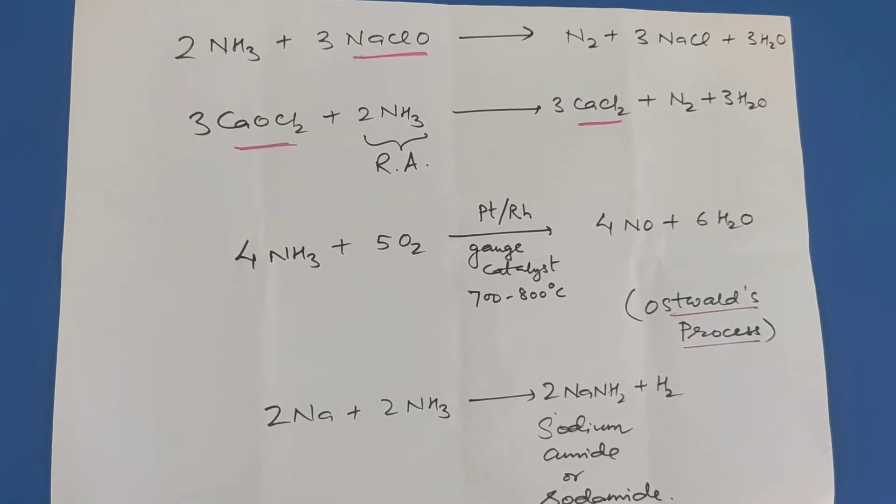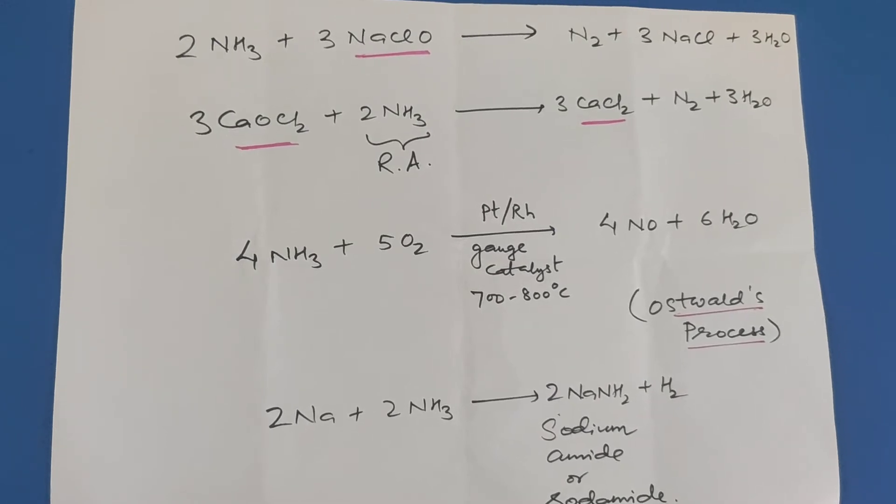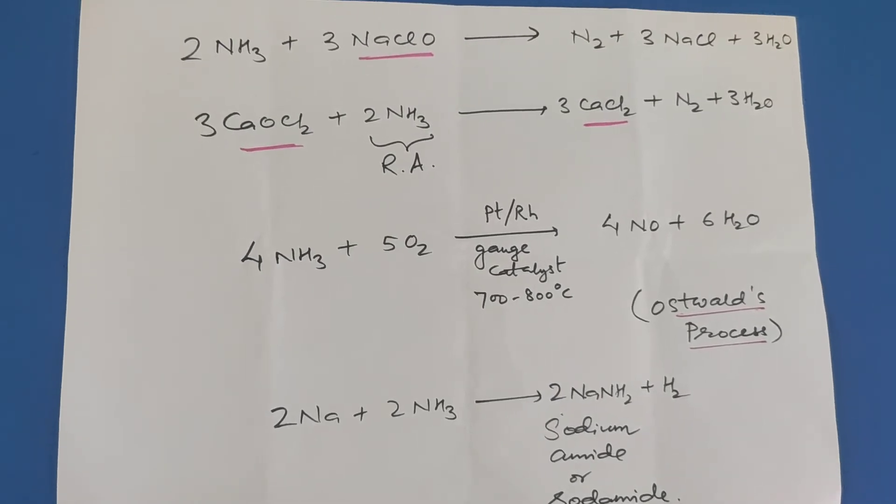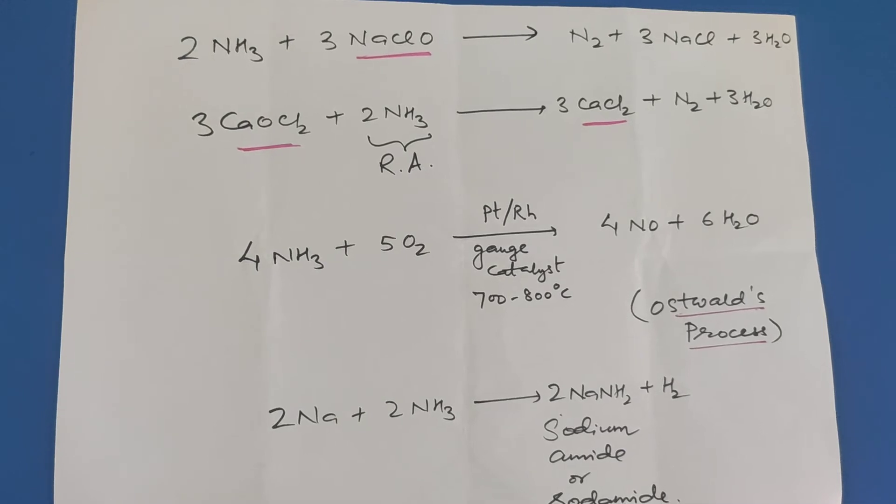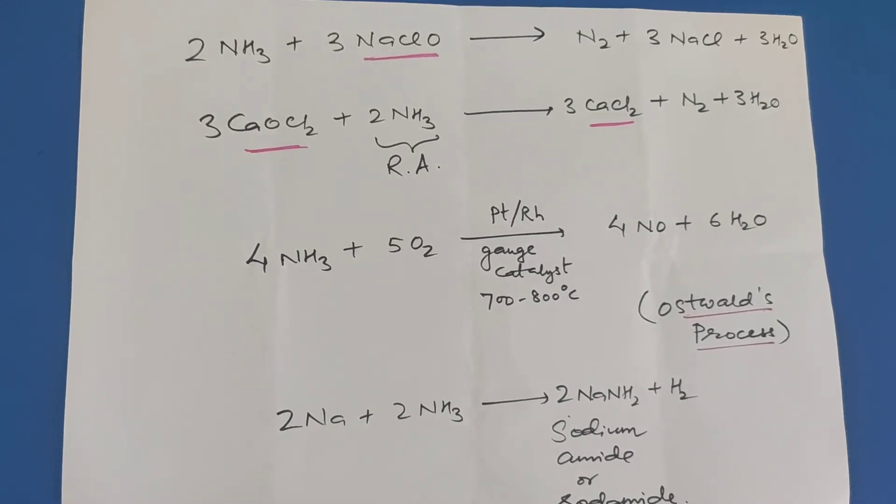Ammonia reacts with sodium hypochlorite to form nitrogen gas plus NaCl plus water. Calcium oxychloride reacts with ammonia to form calcium chloride plus nitrogen plus water. In this reaction, ammonia acts as a reducing agent.